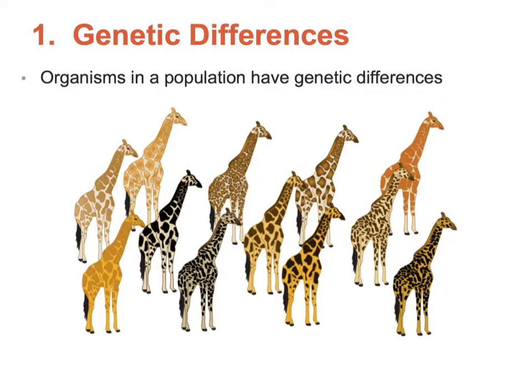Genetic differences — organisms in a population have differences. Here is a population of giraffes; notice all the differences. Nature would choose, let's say, this particular giraffe, maybe because the environment was dark, as opposed to another giraffe which would be easily spotted. There are differences in a population — that's the first tenet of Darwin's Theory of Evolution.